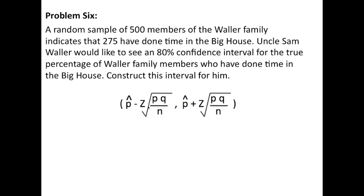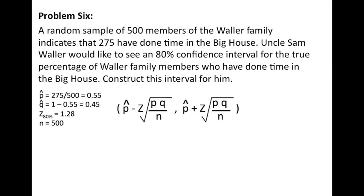Here is the formula that we would use in order to solve this problem. Our confidence interval is p hat minus z times the standard deviation of the p hat distribution, and p hat plus z times the standard deviation of the p hat distribution. We know the value of p hat, which is 0.55. And from that, we can calculate q hat, which is 1 minus p hat, or 0.45. Our z score for 80% confidence is 1.28. And n for this problem is 500.